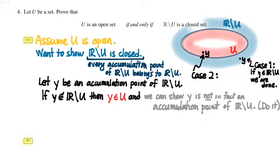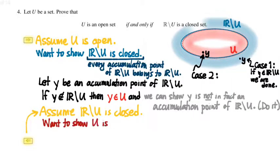Meanwhile, coming in the back, the backward implication requires us to show that if R minus U is a closed set, so we're going to start by assuming the complement of U is closed, we want to show that that makes U an open set.